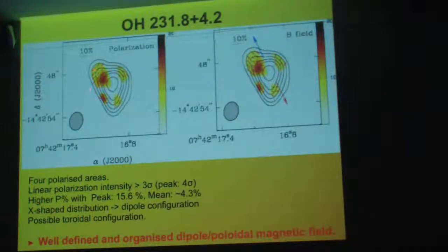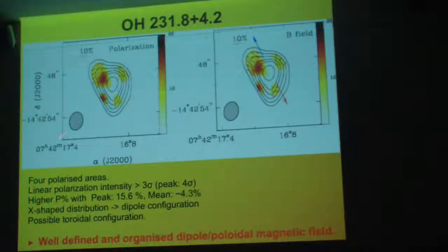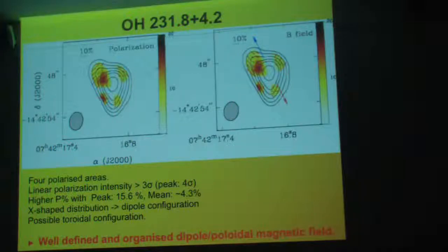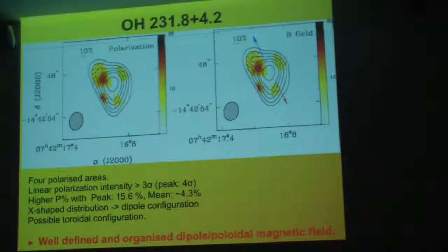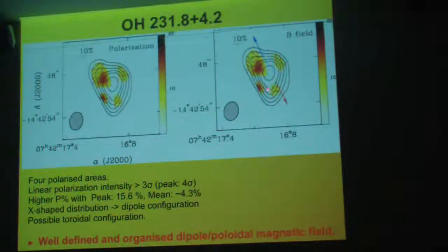Each block contains polarization vectors which, within each block, are well aligned and well constrained — they have a principal direction. The percentage of polarization in this object is much higher than in CRL 618, and we reach a peak of 15.6%, with a mean of 4.3%. So if you rotate those vectors by 90 degrees to get your magnetic map, what you have is a nice X-shaped distribution.